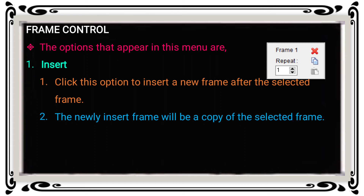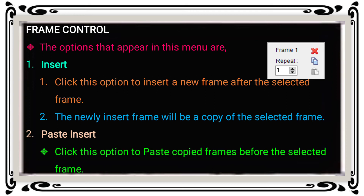The newly inserted frame will be a copy of the selected frame. To copy a set of frames, you can use Ctrl+C or right-click the mouse button to bring up the pop-up menu and select the Copy option. After copying, the new insert frame is added at the end of the selected location.